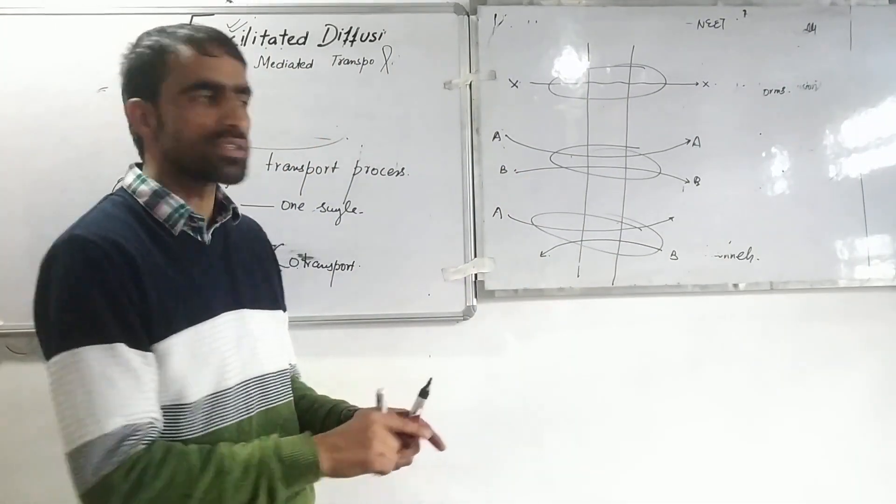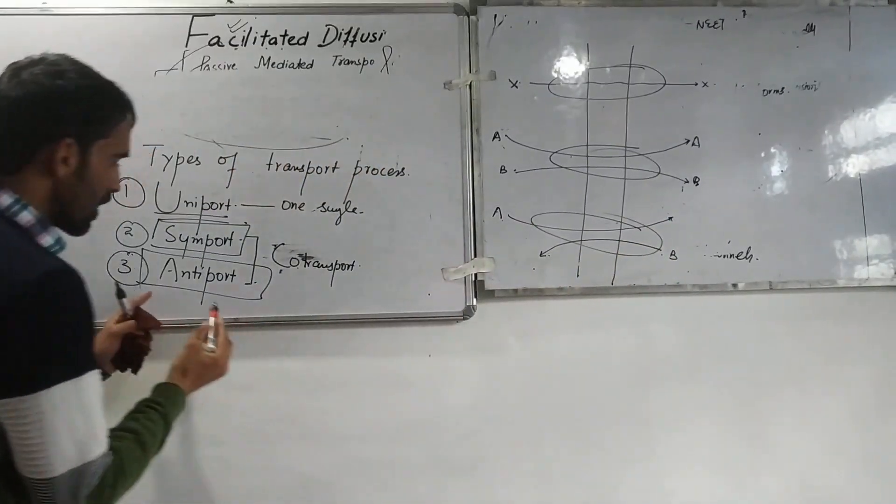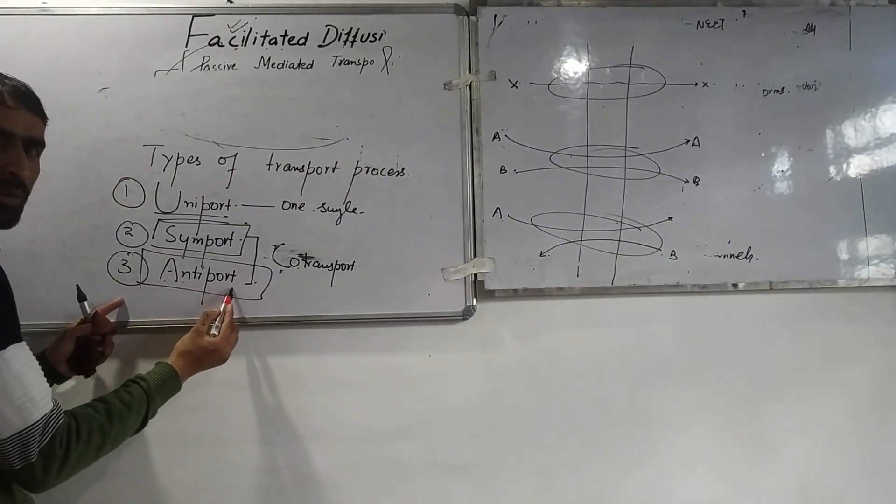Or if two different molecules whose direction is opposite will pass simultaneously, one showing influx, another showing efflux. This is called antiport.